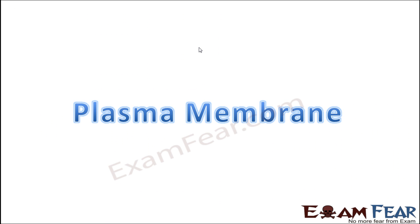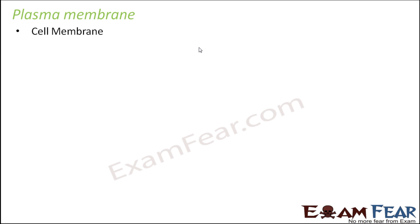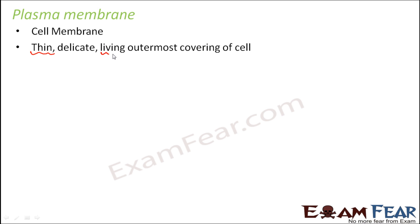We will start our discussion with the plasma membrane, spending quality time understanding its structure and function. The plasma membrane is also known as the cell membrane. It is a thin, delicate, living outermost covering of the cell — it is not thick, and importantly, it is a living layer which encloses the cell. Since it is the outermost boundary, it ensures protection and serves many different functions.